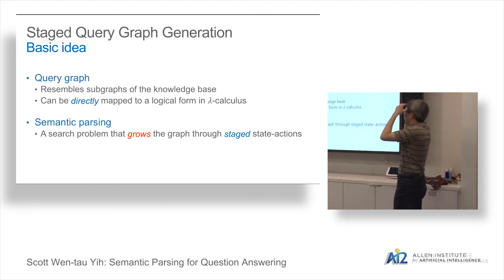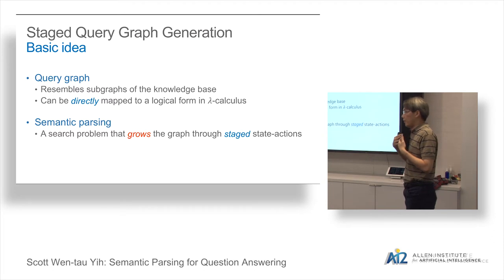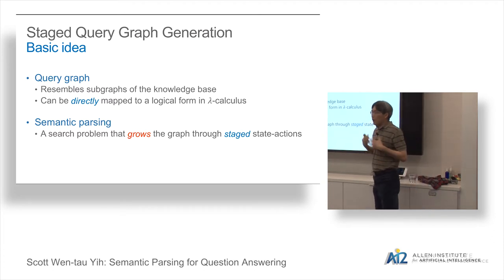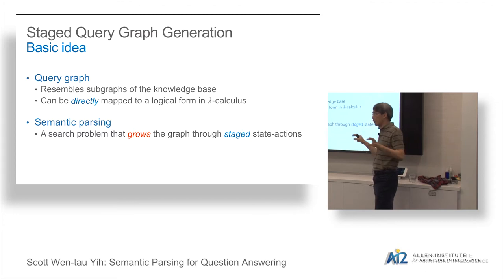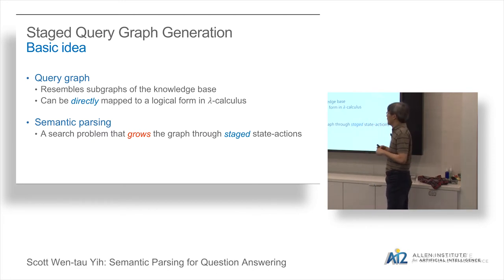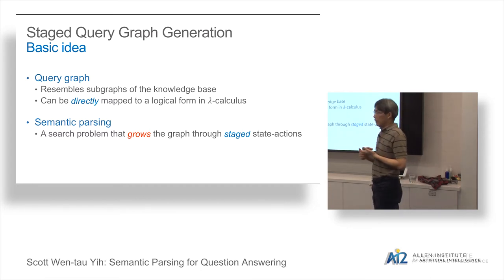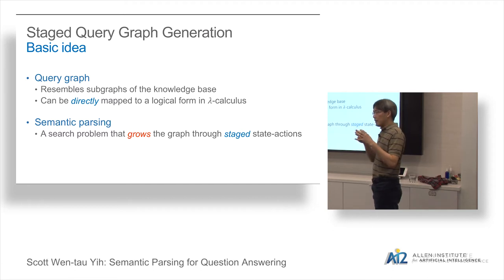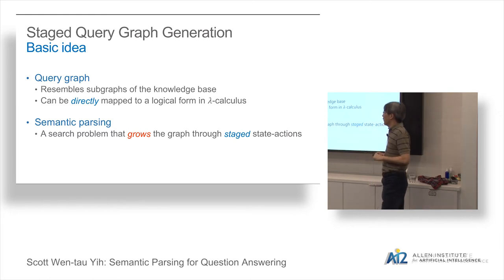In this work, we propose two key ideas compared to previous work. First, even though we still want to do semantic parsing, we don't directly generate a logical form or a SPARQL query. Instead, we invented a different representation which we call the query graph. We are trying to represent the logical form in this graph representation. The reason is that we are using Freebase, which is a knowledge graph, so representing it as a graph makes it easier to map to the subgraph in a knowledge base.